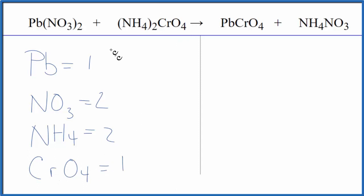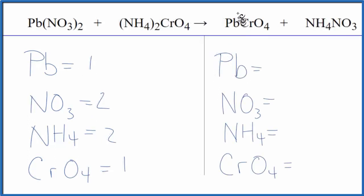On the product side, let me write the atoms here. I've got one lead, one nitrate, one ammonium, and then one chromate. So when you look at that,